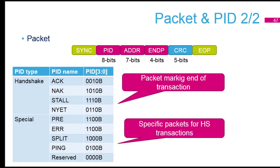About the handshake: ACK and NAK — you know what those are. STALL means not supported, for low speed and full speed. Then there's NYET — 'not yet' — which is just for high speed. NYET means 'I'm not ready, try later.' That's the difference with STALL: STALL means it's not supported at all, while NYET means it's not possible right now but may be later. There are also special packets: error, split, and ping.